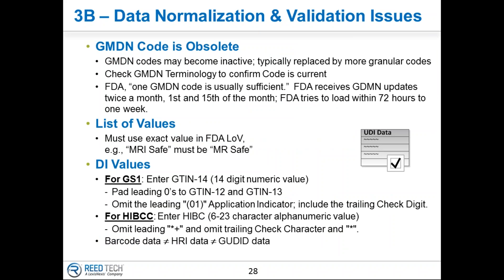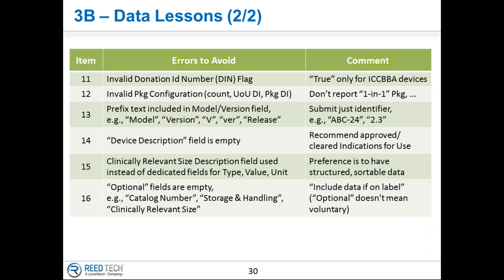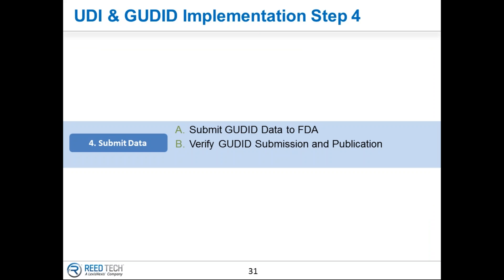Here are some more examples — I'm going to leave this for homework. The next two slides go into very specific examples we have seen that cause a particular record not to be accepted by the FDA. Homework, homework.